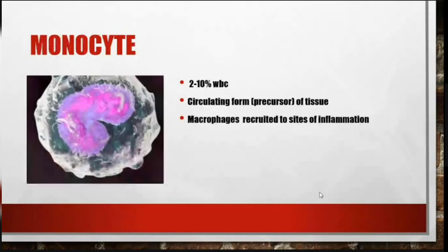Monocytes make up 2 to 10 percent of WBCs. They are the circulating form of tissue macrophages and are recruited to the sites of inflammation.